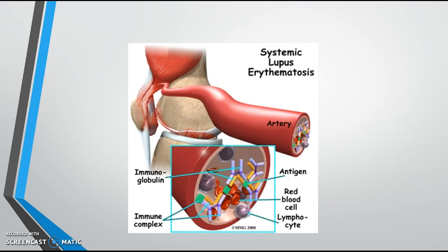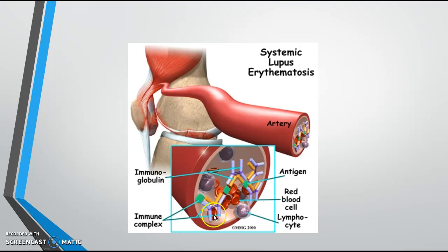Lupus is an autoimmune response to cellular components. As I circle with the mouse, you'll see this big glob of material. In lupus, you develop autoantibodies to cellular components — it could be DNA or proteins in a cell structure. You have the antigen, an antibody attaches to it, then another antibody, forming what they call an antigen-antibody complex. Looking at this vessel, you can see your red cells and lymphocytes alongside this large immune component.